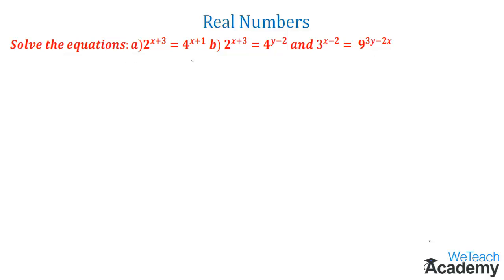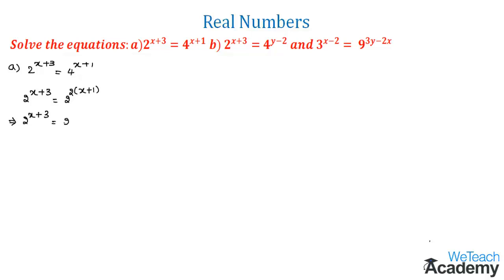So first let us write the first example, which is 2^(x+3) = 4^(x+1). We can rewrite this as 2^(x+3) = 2² raised to (x+1), which gives us 2^(x+3) = 2^(2x+2).